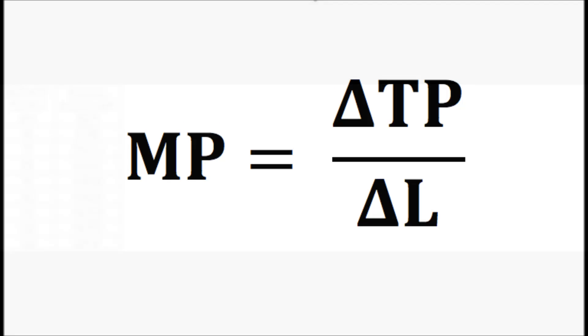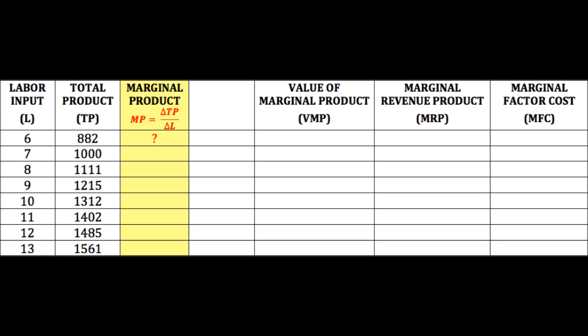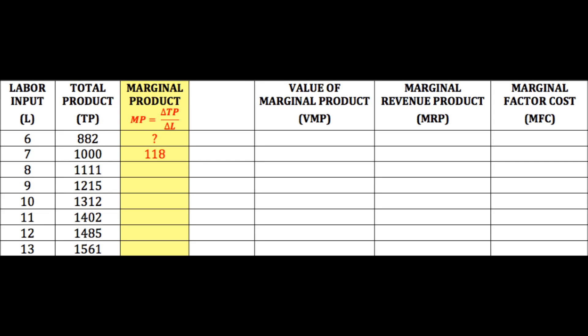As we defined it in episode 20, marginal product is the change in total product over the change in the resource, in this case, the added output as we add one more worker. Because we do not know the total output for five workers in this example, we cannot determine how much more output there is when we have six workers, but we can calculate the marginal product for each of the other workers by determining how much the total product has changed with each one. Again, once we've figured out the marginal product values, we can see the pattern of diminishing marginal product.